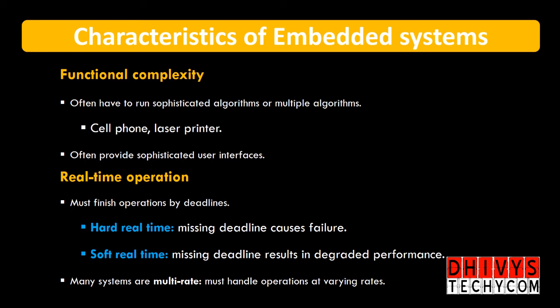In real-time operations, we have two different types: one is the hardware part and another one is the software part. If hardware has a failure, the entire system fails. And if software has a failure, the software is corrupt, the algorithm works out, and the entire performance will degrade. Real-time operations have to be taken care of.